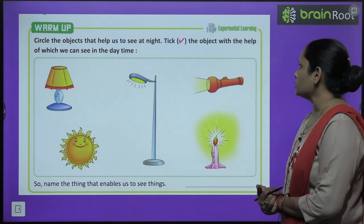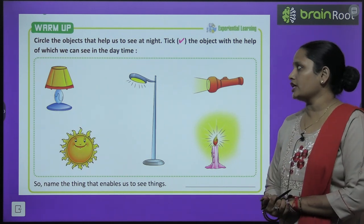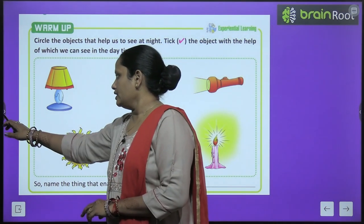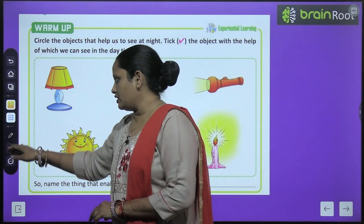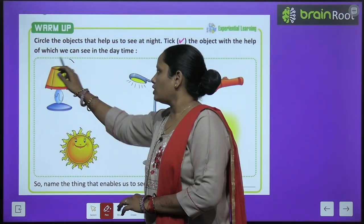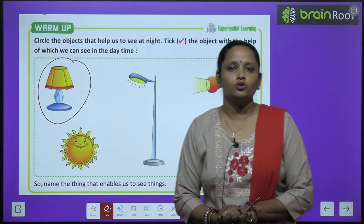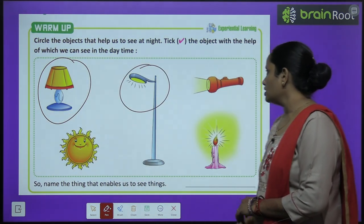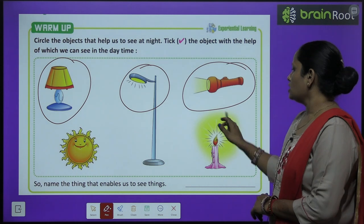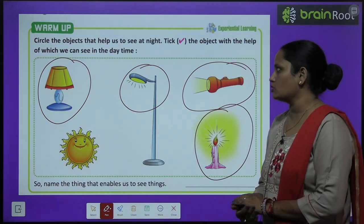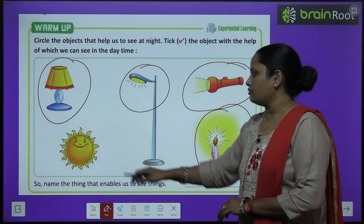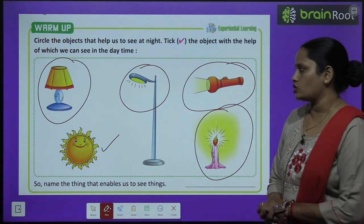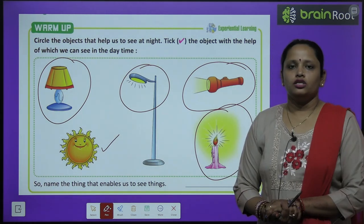Take the object with the help of which we can see in the day time. Unh cheezon ko aapko tick karna hai jinhki vajah se aap din mein dekh sakte ho. Toh raat mein haam is lamp ko use karte hain, this is used, this is used, and this is also used. But in the day time we are able to see because of the sun.